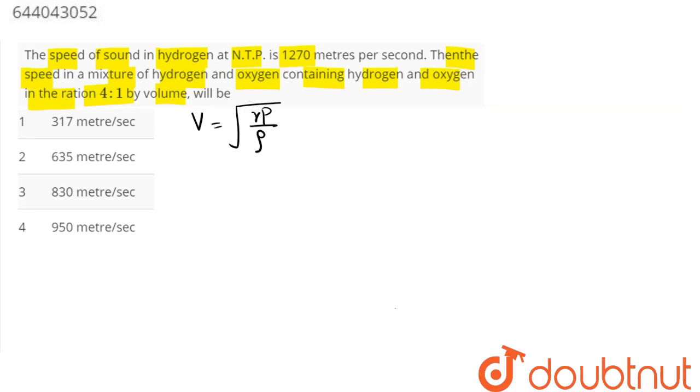So we have velocity as root under gamma p divided by rho. Now since both are monoatomic gases, hydrogen and oxygen, gamma will remain same. P remains same, hence velocity is inversely proportional to root under density.